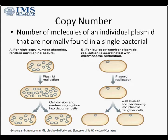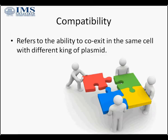The next property is compatibility, which refers to the ability of a plasmid to coexist in the same cell with different kinds of plasmids. Compatibility refers to how compatible the plasmid is in coexisting in the same cell with different types of plasmids. A good compatible plasmid is of course a good cloning vehicle.